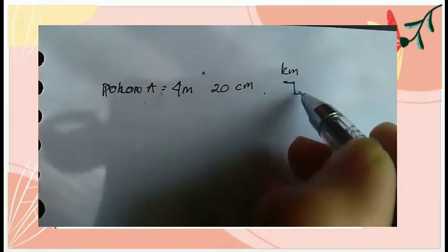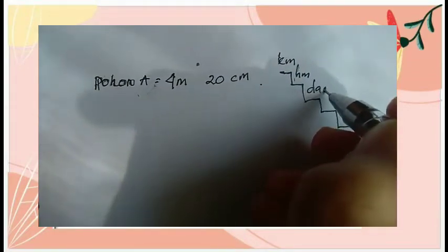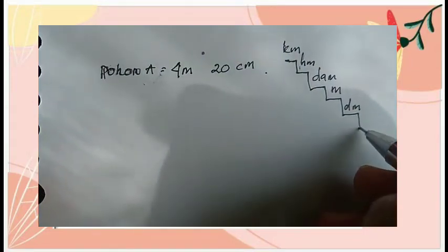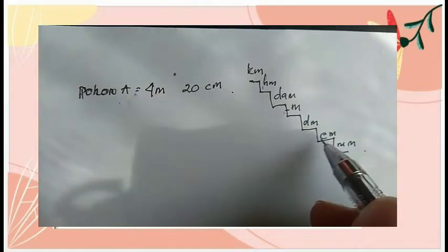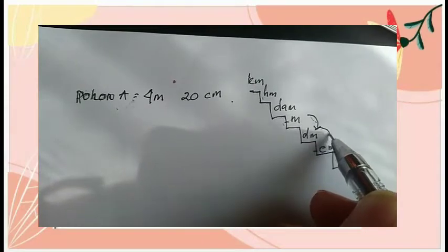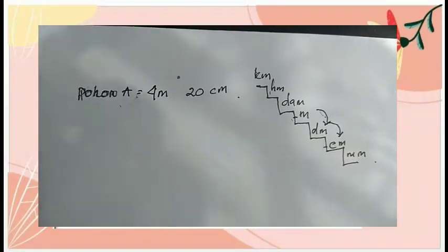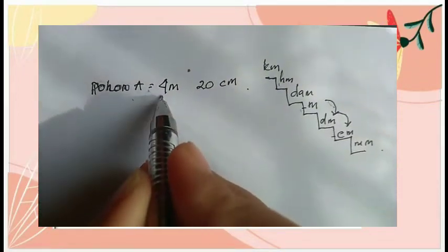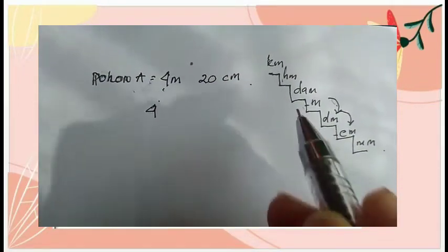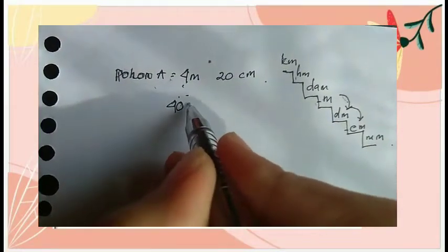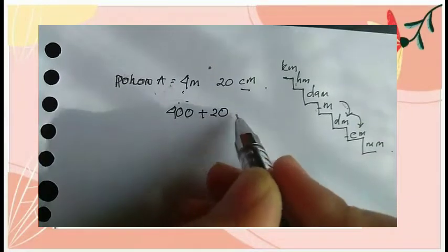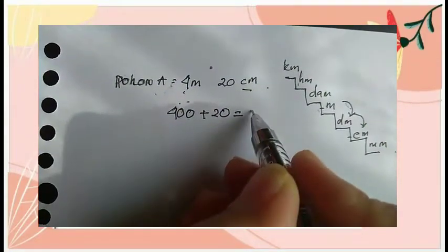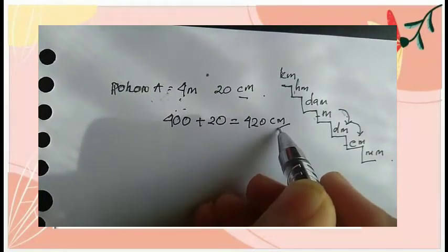Kilometer, hektometer, dekameter, meter, desimeter, sentimeter, dan milimeter. Kita sudah buat tangga. Dari meter menuju sentimeter, turun berapa tangga? Satu, dua. Kalau turun dua tangga, jadi nolnya kita tambah dua di belakangnya. Angka empatnya menjadi empat ratus. Dari meter ke sentimeter ditambah nol dua karena turun dua tangga. Jadi empat ratus ditambah dua puluh adalah empat ratus dua puluh sentimeter.